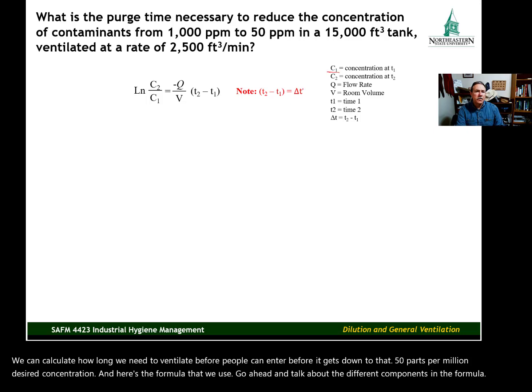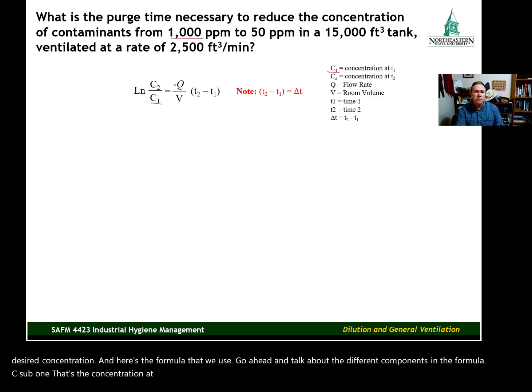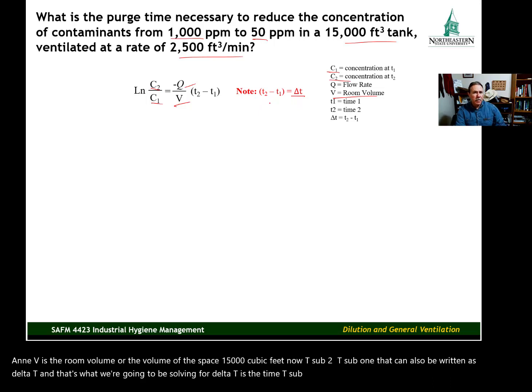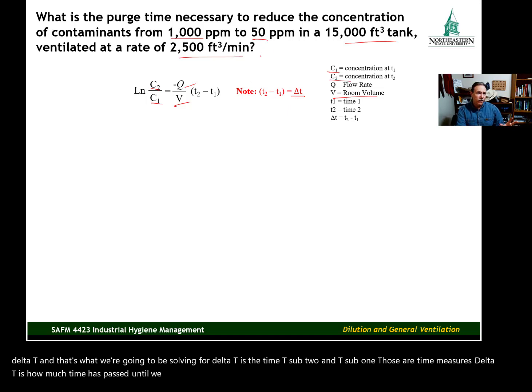C sub 1, that's the concentration at time 1, which is going to be 1,000. C sub 2 is the concentration at time 2, which is 50. Flow rate is 2,500 cubic feet per minute. And V is the room volume or the volume of the space, 15,000 cubic feet. Now T sub 2 minus T sub 1, that can also be written as delta T. And that's what we're going to be solving for. Delta T is the time, or how much time has passed until we reach the 50 parts per million concentration that we're shooting for.